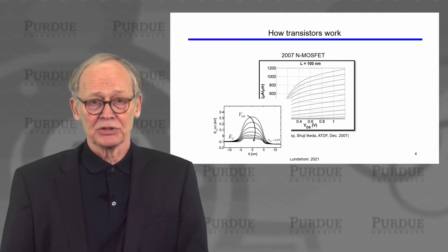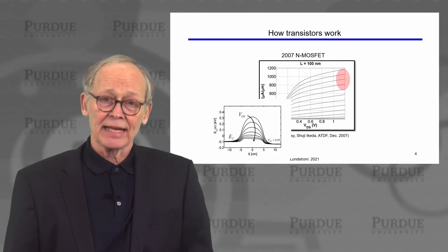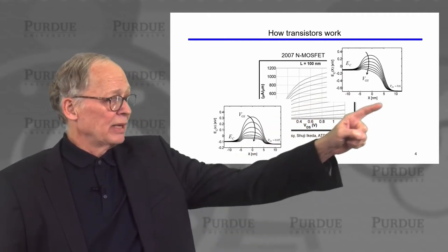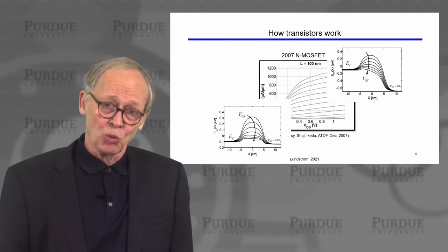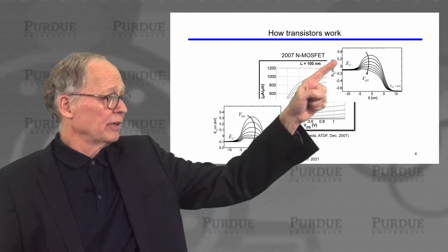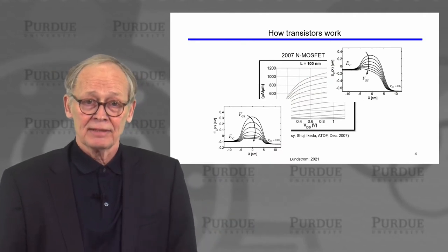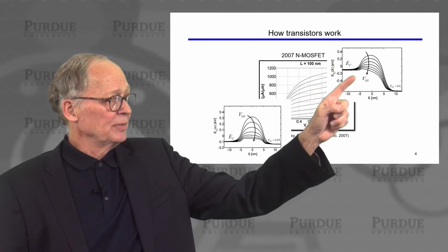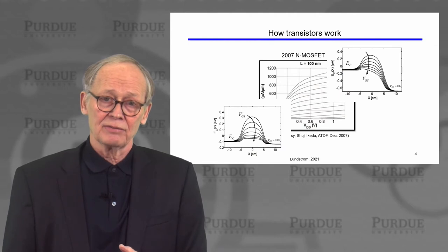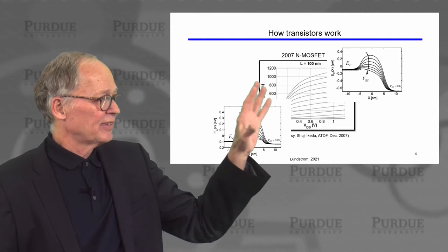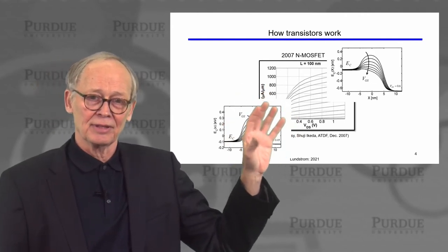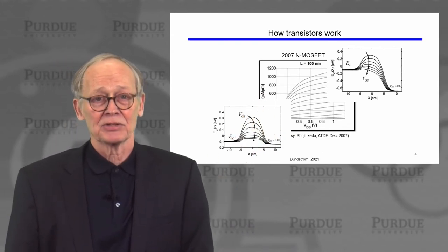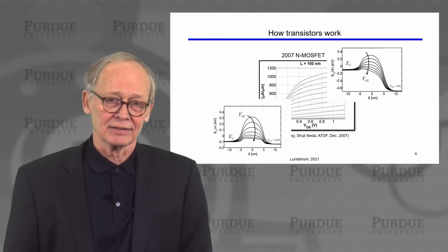If we look at higher voltages and ask why the current saturates, the energy band diagram looks like this: we've applied a large voltage to the drain and pulled the conduction band minima way down, but current still doesn't flow because there is an energy barrier between the source and the channel. A positive gate voltage pushes that energy barrier down and allows current to flow. What's limiting the current is getting over that barrier, so applying a larger and larger drain voltage does very little to the current — that's why the current saturates. This simple picture of how transistors work in terms of energy band diagrams is really probably the most important concept in this course. We're just going to be filling in details of that picture as the course proceeds.